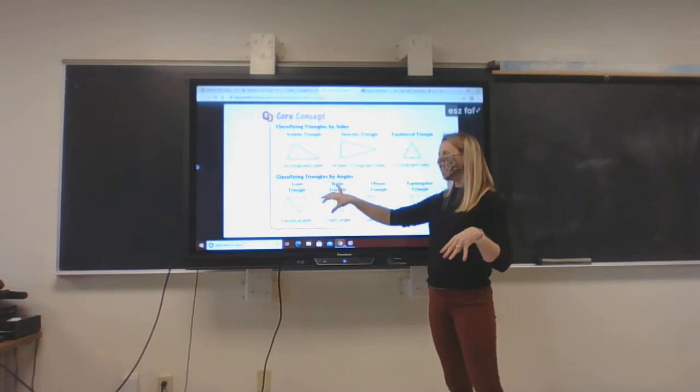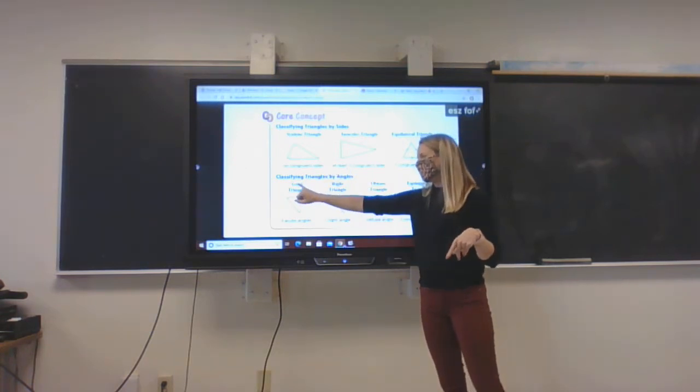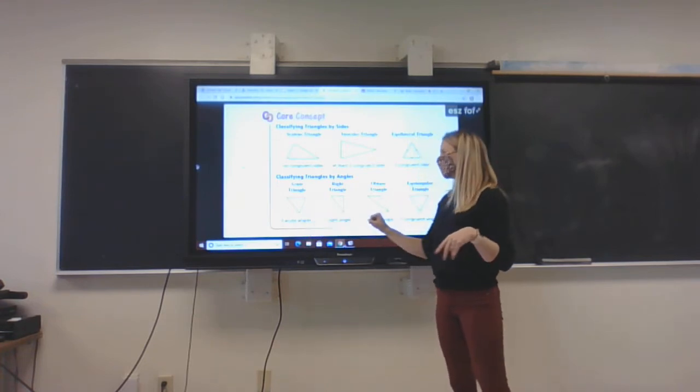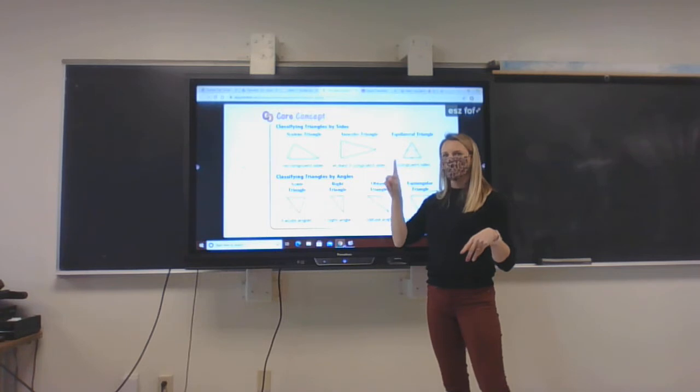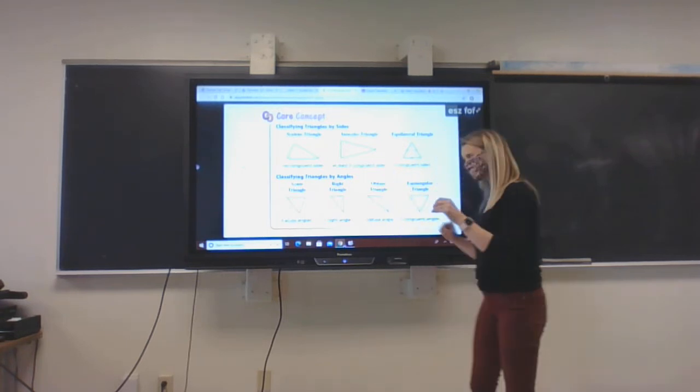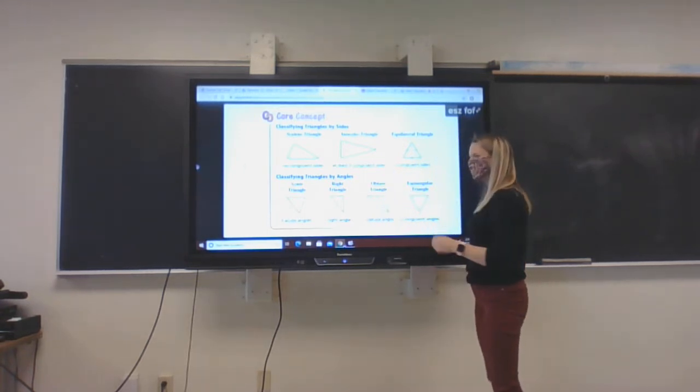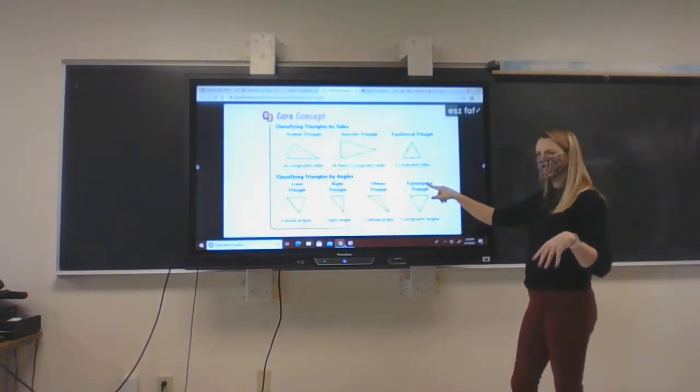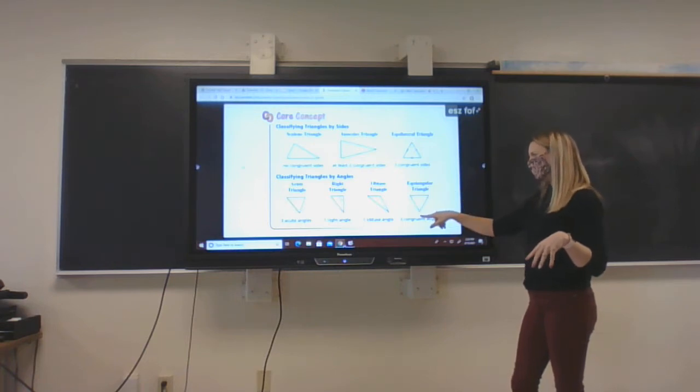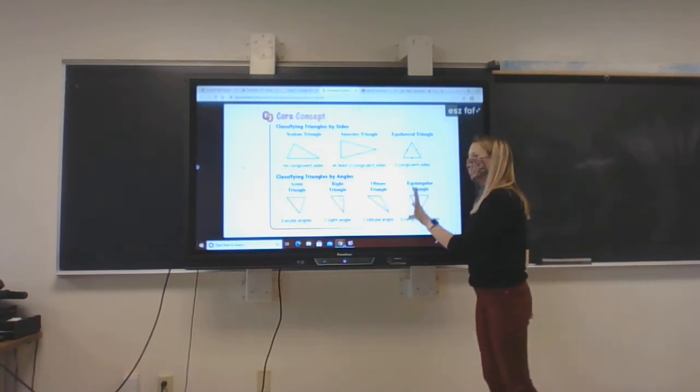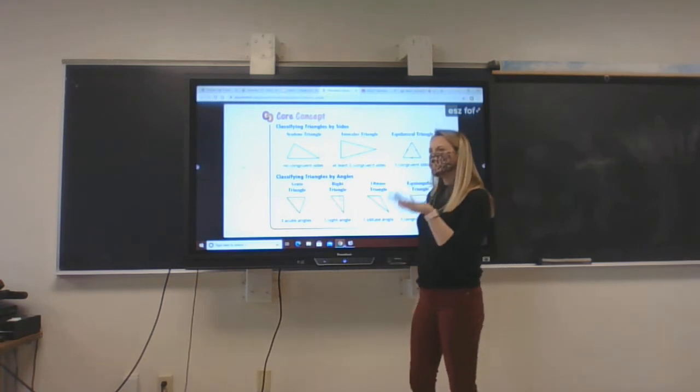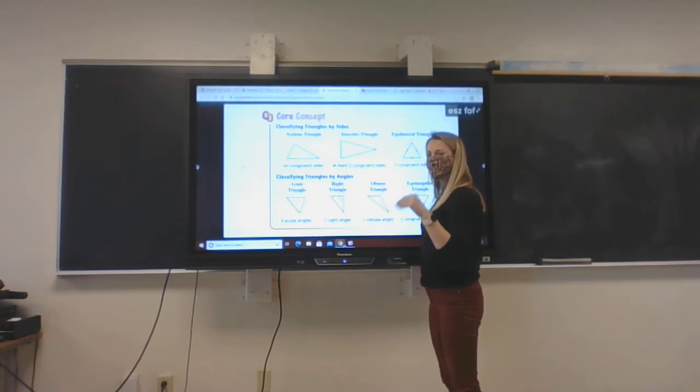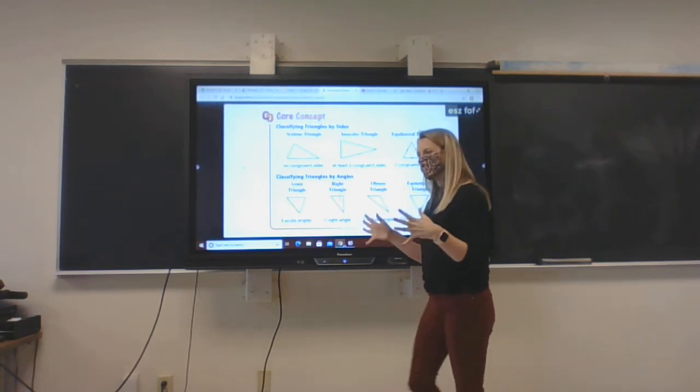Now we're adding on classifying triangles by angles. You have an acute triangle where all three angles are acute angles. You have a right triangle where you have just one right angle. You have an obtuse triangle where you have one obtuse angle. And then you have an equiangular triangle where all three angles are congruent. When you are drawing these in your notebooks, please make sure that you are adding in the correct symbols to help you later when you look at your notes.